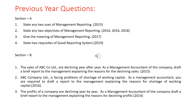Under Section B, they have asked you to draft a report — for example, as the management accountant of the company, draft a brief report to the management explaining the reasons for declining sales and the measures or suggestions you would like to suggest to the management. The specimen already discussed should be used as a guide to draft such a report.